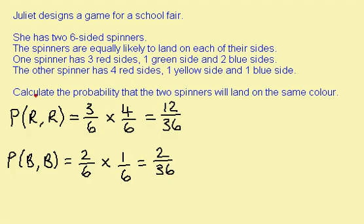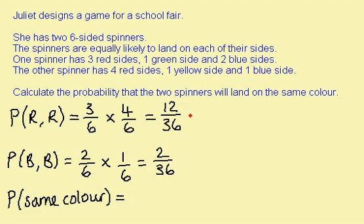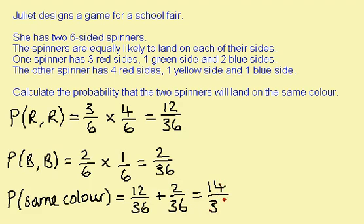Now to get both spinners on the same colour, they could both land on red or they could both land on blue. So I now need to add these two: 12 out of 36 add 2 out of 36 gives me 14 out of 36. This is my final probability.